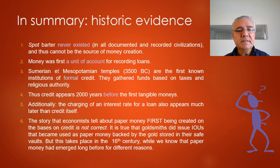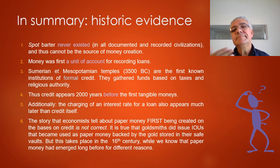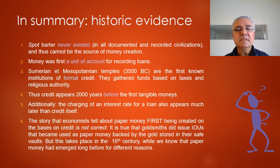The economist's story that paper money was first created out of credit is not entirely correct. While goldsmiths in the 16th century did issue IOUs backed by gold in their vaults — essentially the first implementation of modern paper money backed by gold — paper money existed way before that in China, and for different reasons. Thank you very much for your attention.